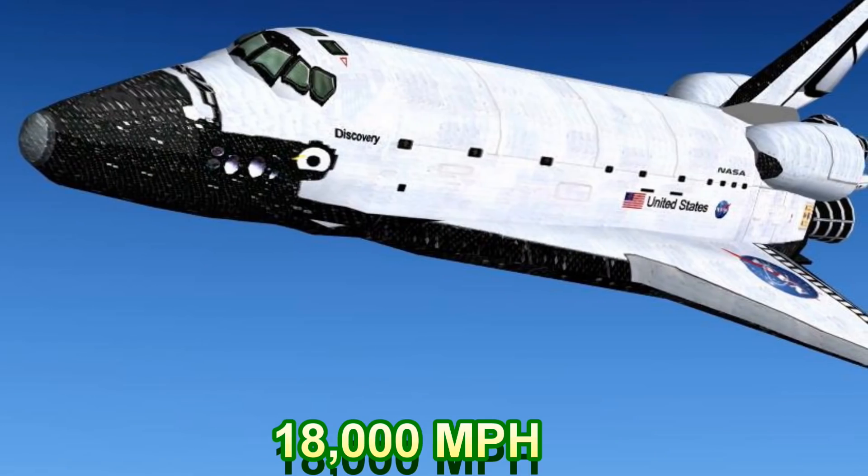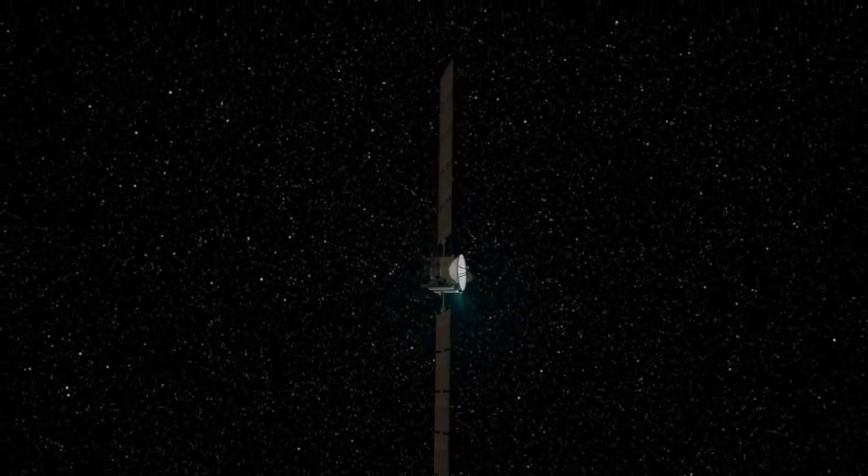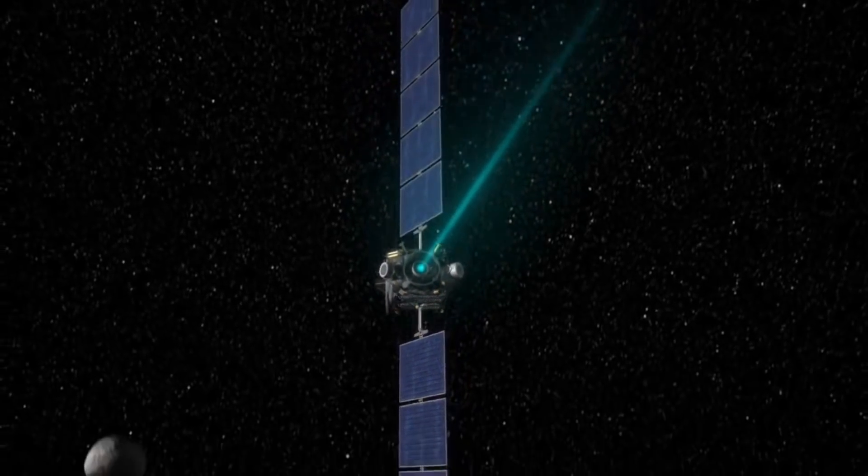In comparison, the old space shuttle could reach speeds around 18,000 miles per hour. Lastly, as I said earlier, ion thrusters are much more fuel efficient compared to chemical propulsion at 90% compared to 35%.